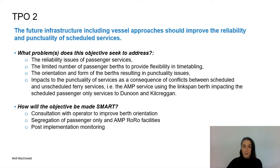TPO2 relates to improving the reliability and punctuality of the scheduled passenger services, which relates to the Dunoon and Colintraive services. The problems that this TPO aims to address include the reliability issues of the passenger services to Dunoon and Colintraive, the limited number of passenger berths, and the sub-optimal orientation of the berths which can result in punctuality issues.